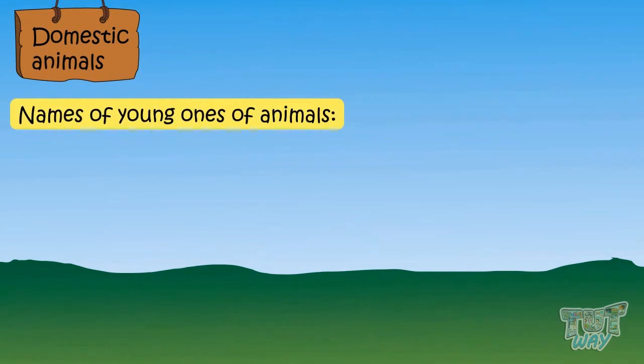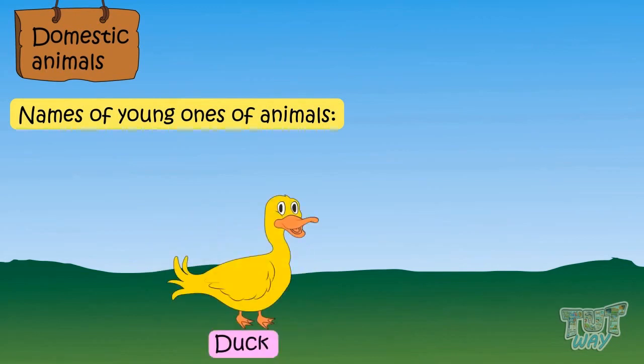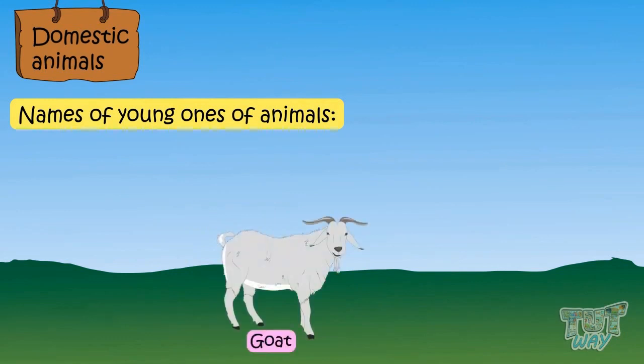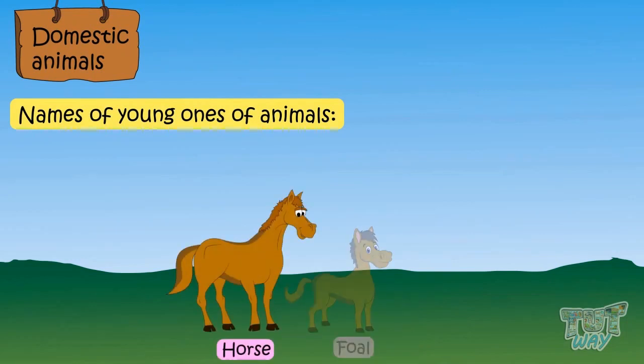Now let's learn the names of young ones of animals. Young one of a hen and a rooster is called chick. Young one of a duck is called duckling. Young one of a goat is called kid. Young one of a horse is called foal.